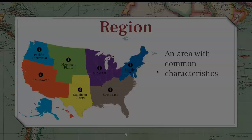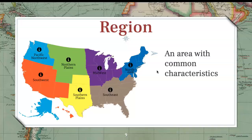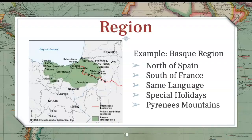The next theme of geography is region. A region is an area with common characteristics. Here's a map of the United States broken into its general regions, which share common characteristics. The example of region I chose is the Basque region in Spain. Two of my favorite cities are up here — San Sebastian and Bilbao. The characteristics it shares are that it's in the north of Spain and the south of France; they all speak the same language, have special holidays, and their economy is based around the Pyrenees Mountains that divide France and Spain.